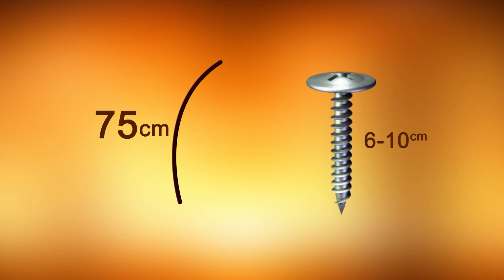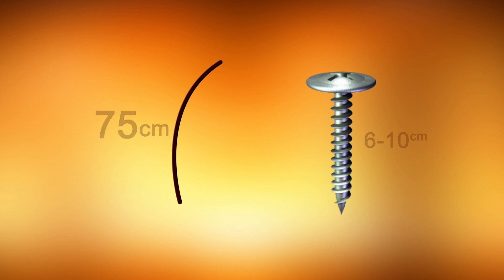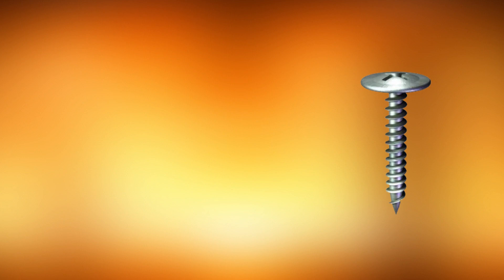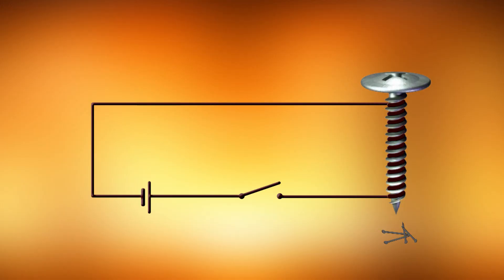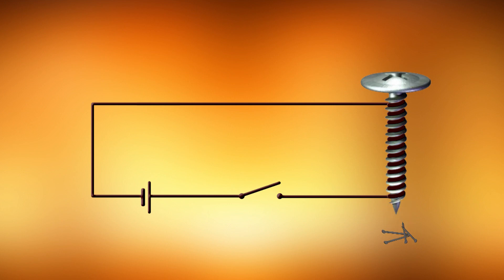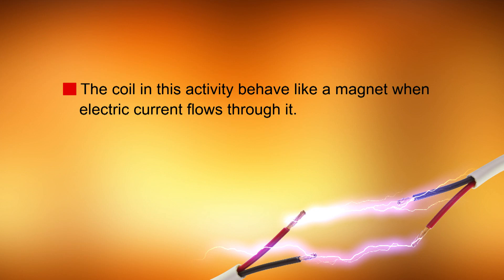An electric current can be used to make a magnet. Take a 75 cm long piece of insulated flexible wire and an iron nail about 6 to 10 cm long. Wind the wire tightly around the nail in the form of a coil. Connect the free ends of the wire to the terminals of a cell through a switch. Place some pins near the end of the nail. Switch on the current — what happens? Do the pins cling to the end of the nail? Switch off the current — are the pins still clinging to the nail?